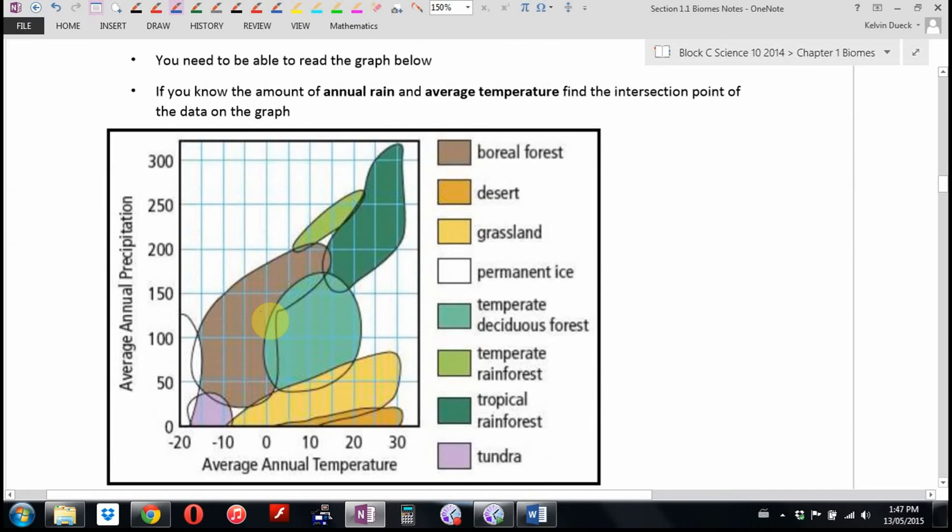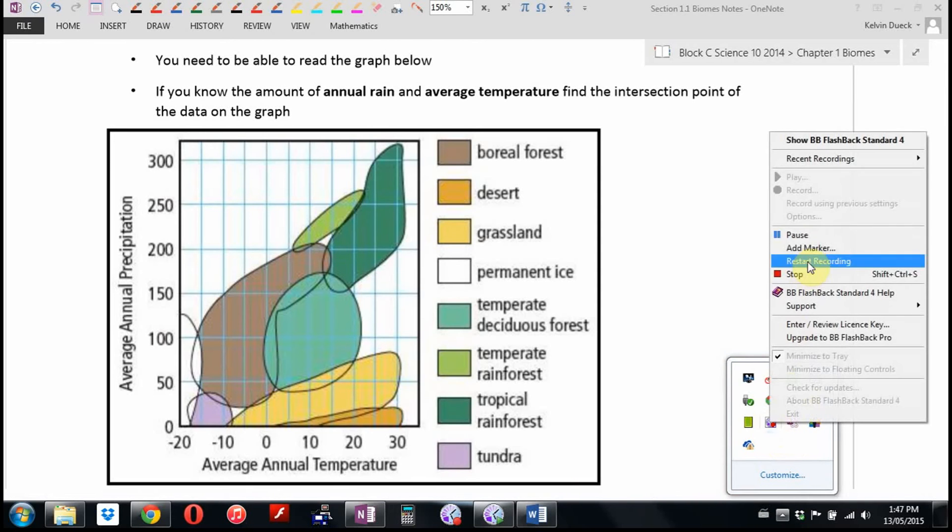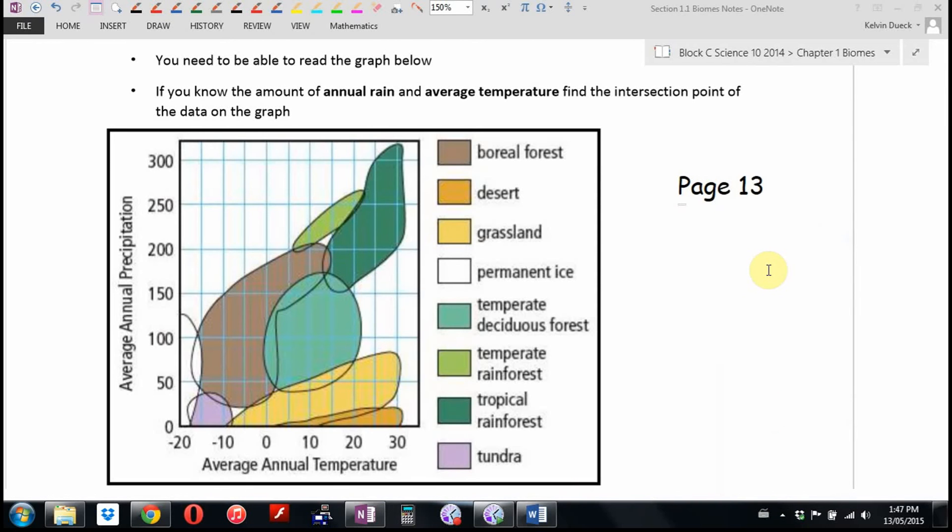You have to be able to read this graph. It looks very complicated. It's not. Yours is black and white. I have a lovely color one here. And I think it's in your textbook as well. If you want the lovely color picture, page 13 in your textbook. Here's what it's telling you. It turns out we have the following subgroups of biomes. And there's some disagreement, but this is kind of what our curriculum has decided.